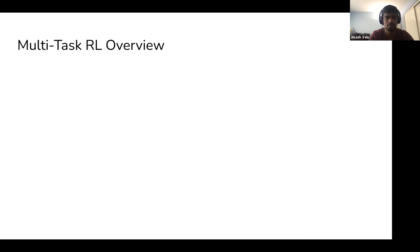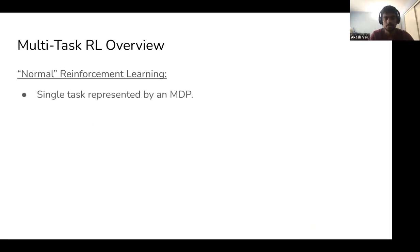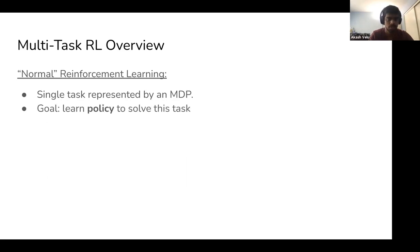In normal reinforcement learning, an agent interacts with the world. A single task, such as playing chess or opening a window, is represented by a Markov Decision Process, which encodes the rewards the agent receives and the transition dynamics of the world. The goal of the agent is to learn a policy that takes in what the agent observes and outputs the action taken at every given time step.